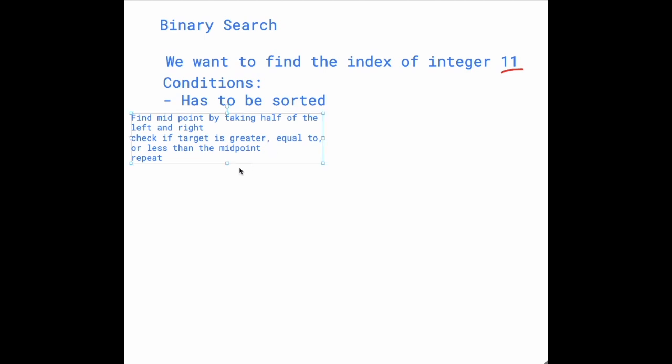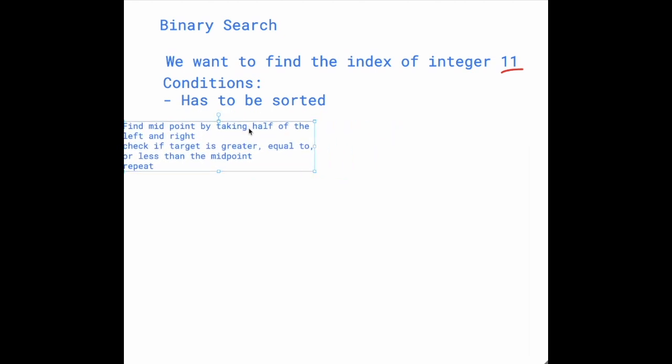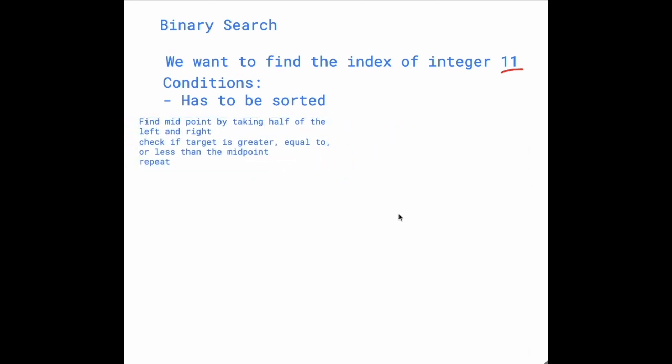But yeah, let's just get into it. So we have this idea of we're basically taking the midpoint of a certain range and then we're basically splitting the search range into smaller and smaller parts. So how do we do this?